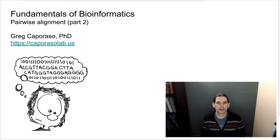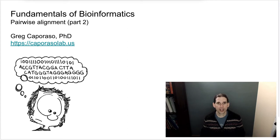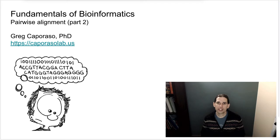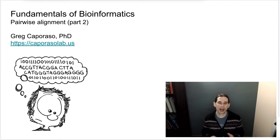Welcome back to Fundamentals of Bioinformatics. This is part two of the Pairwise Alignment lecture series. In the last lecture, I introduced the idea of pairwise alignment as probably one of the most fundamental algorithms in bioinformatics. We looked at computing Hamming distances between aligned protein sequences, and we saw how Hamming distance between hemoglobin was associated with the time since most recent common ancestor between a few animals.